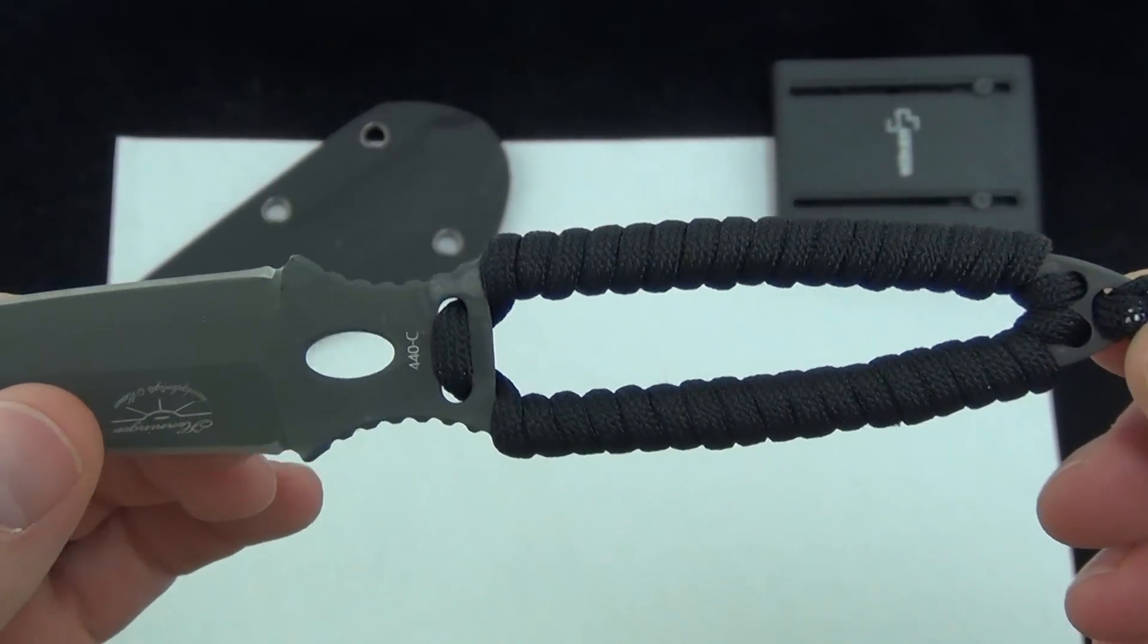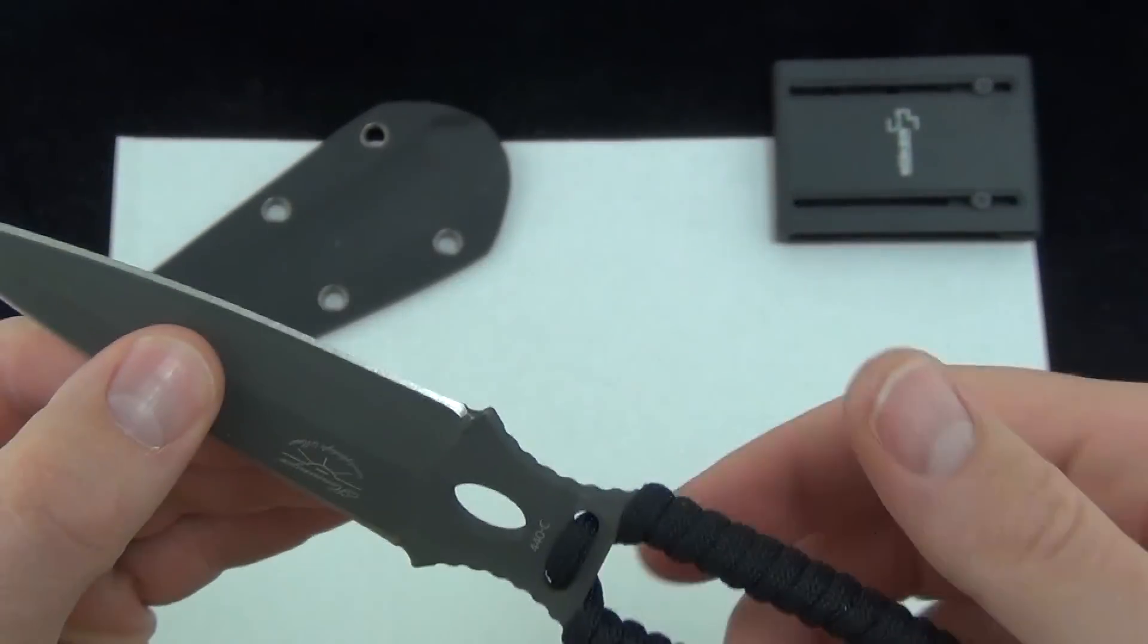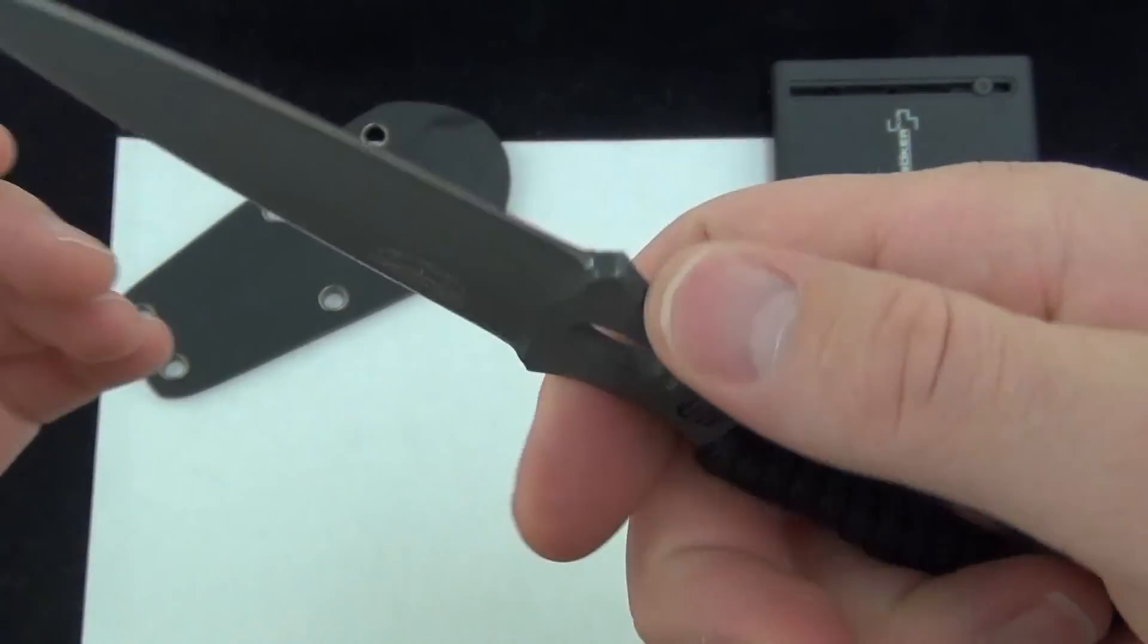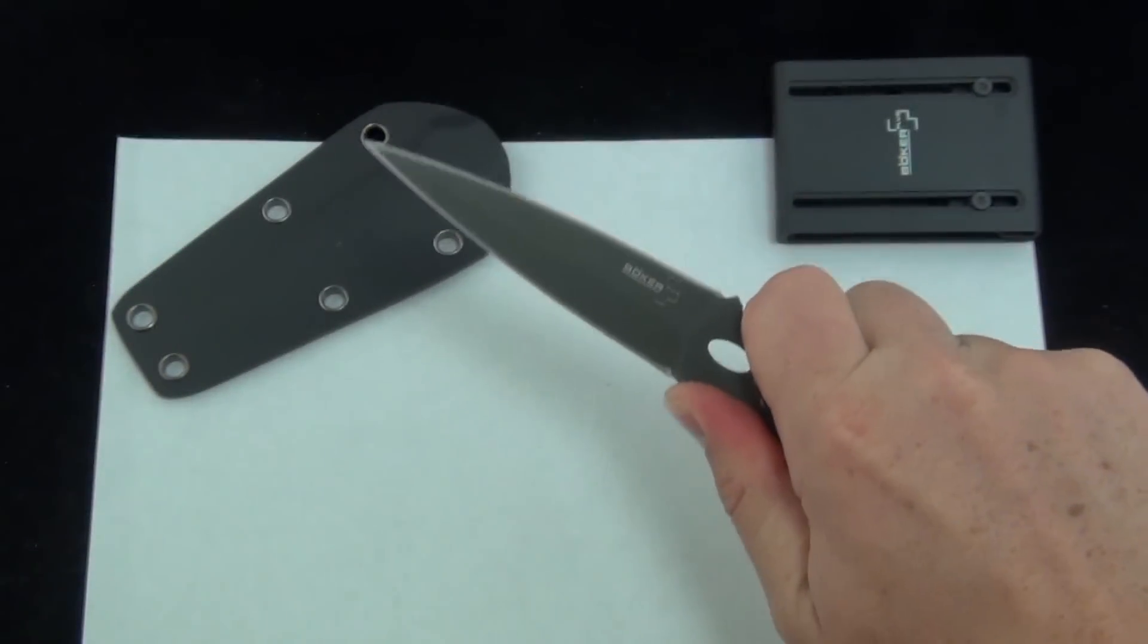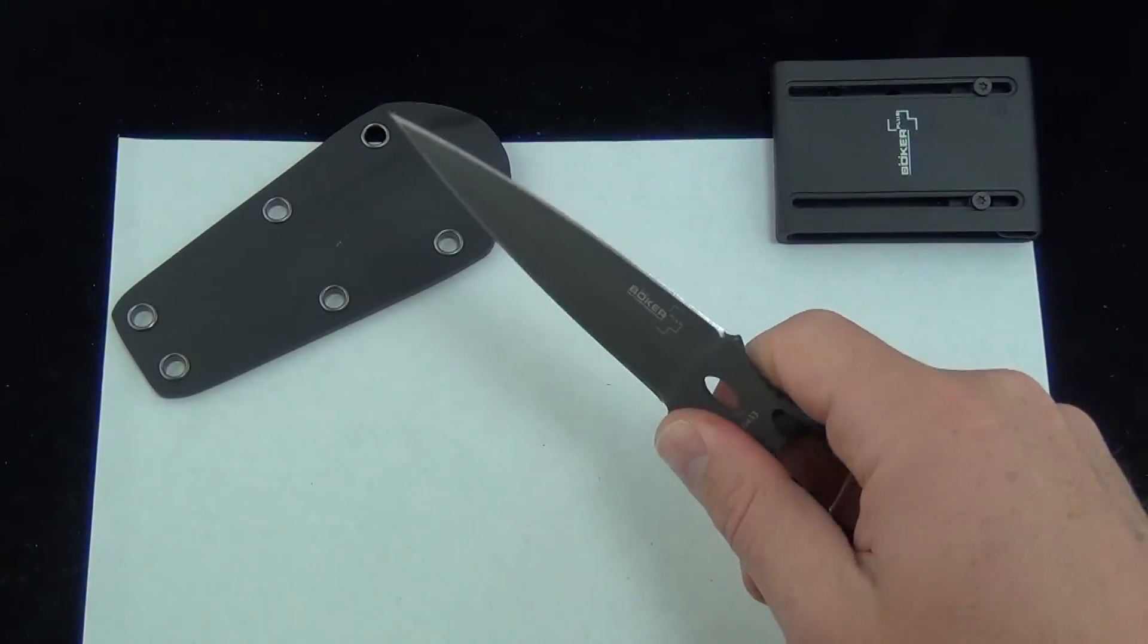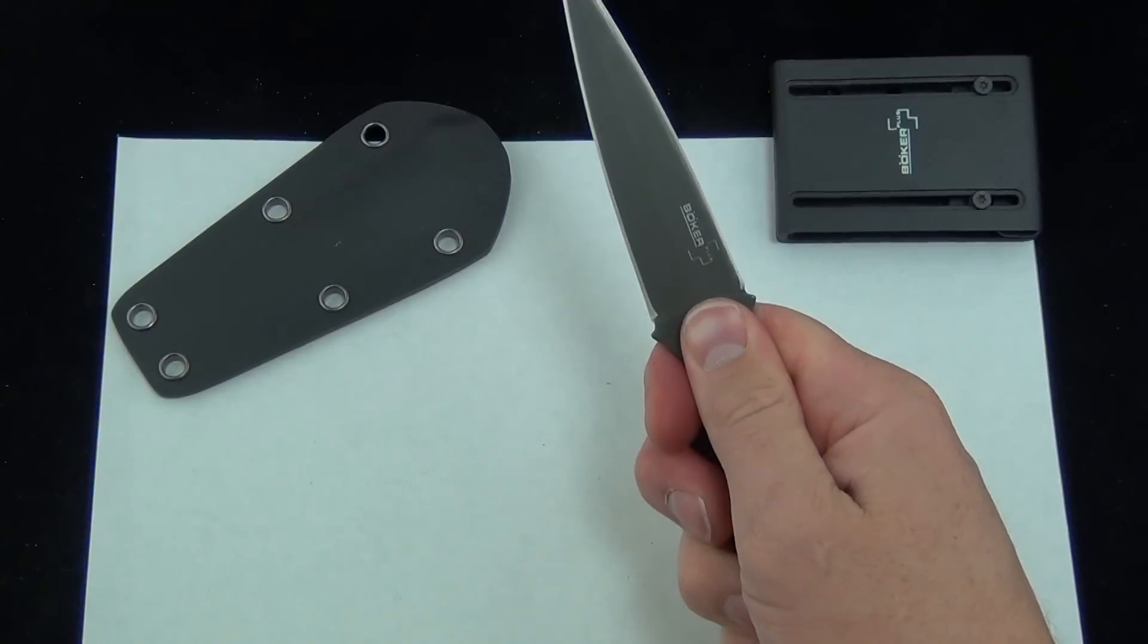You've got the paracord wrapped handle, skeletonized. And you've got these two cutouts on the side, makes for some really nice grip. It also has a cutout in the middle if you want to hold the blade like so.